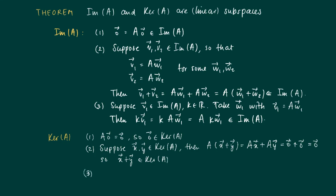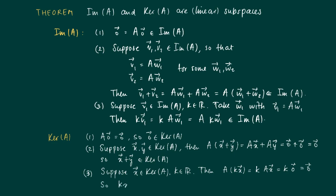Thirdly, we need to show that when a vector belongs to the kernel, any scalar multiple also belongs to the kernel. Suppose that x belongs to the kernel and take a scalar k. Then A times k times x equals k times A times x. Since x belongs to the kernel, A times x equals 0, so we get k times the zero vector, which equals the zero vector. So k times x also belongs to the kernel.